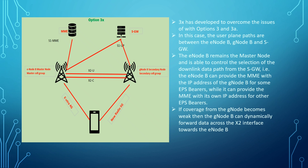The eNodeB remains the master node and controls the selection of the downlink data path from the signaling gateway. The eNodeB can provide the MME with the IP address of the gNodeB for a given EPS bearer, while providing its own IP for other EPS bearers. Additionally, if the coverage of the gNodeB becomes weak, the gNodeB can dynamically forward data across the X2 interface toward the eNodeB.